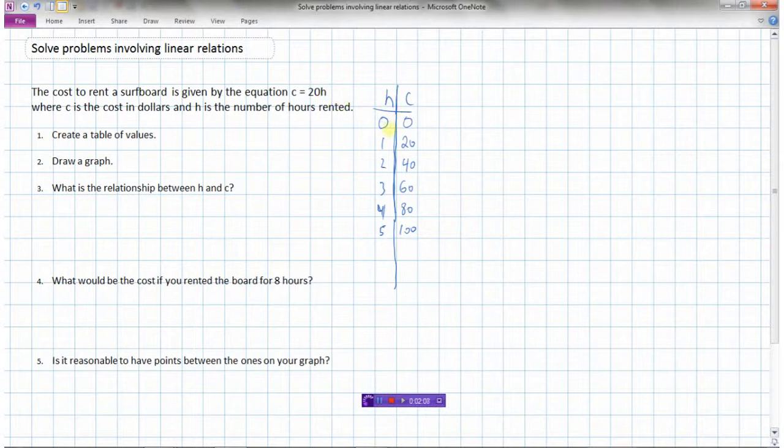So the values of H are just ones that I've arbitrarily picked. And the cost I got by putting those values of H in here, and working out whatever 20 times these values of H were. So I've got my table of values. Now I'm going to draw a graph.